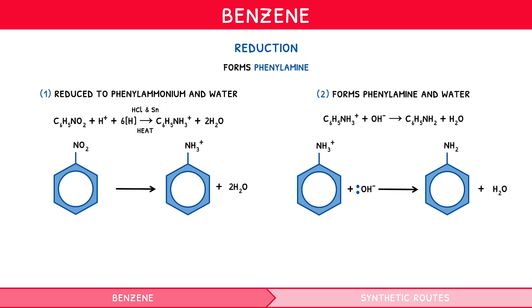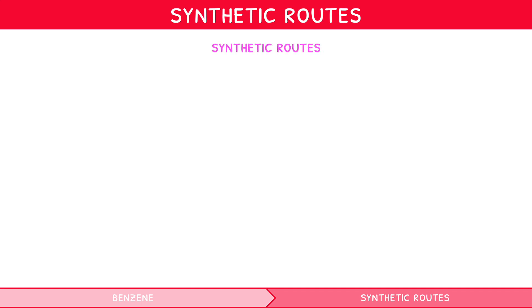And that's it — you now know everything about homologous series and functional groups. Let's now summarise all our organic knowledge through some important reaction mechanisms, known as synthetic routes. In your IB Chemistry higher-level exam, you could be asked to synthesise a species within one homologous series using a reactant from another, proposing a reaction mechanism. Such questions require knowledge from the entire organic chemistry topic, and so can be tricky until you have memorised all the reactions.